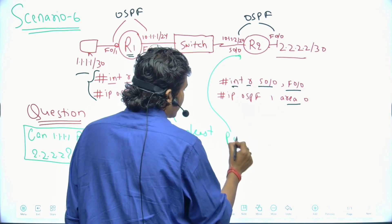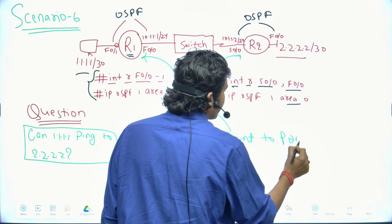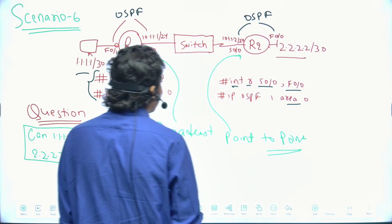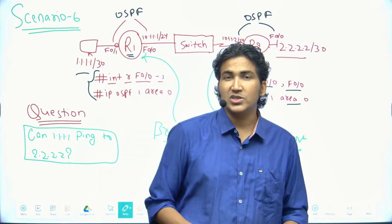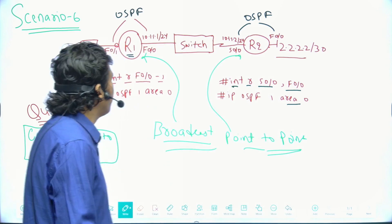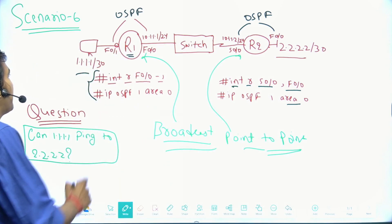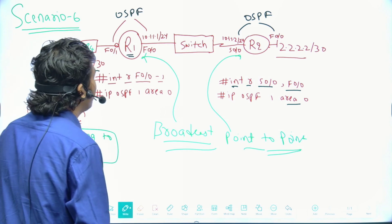...is point-to-point. Right? So this is the reason. As the network type is mismatching, this is the reason why these two PCs are not able to communicate with each other.